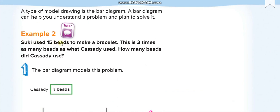Next example: Suki used 15 beads to make a bracelet. This is three times as many beads as Cassidy used. So how much did Cassidy use? They are not saying Cassidy used three times of Suki — we need to find what Cassidy used.